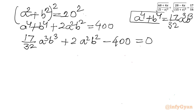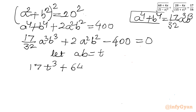Let us assume ab equal to t, and multiply this equation by 32. So I will be writing 17t cubed plus 64t squared minus 12,800 equal to 0.